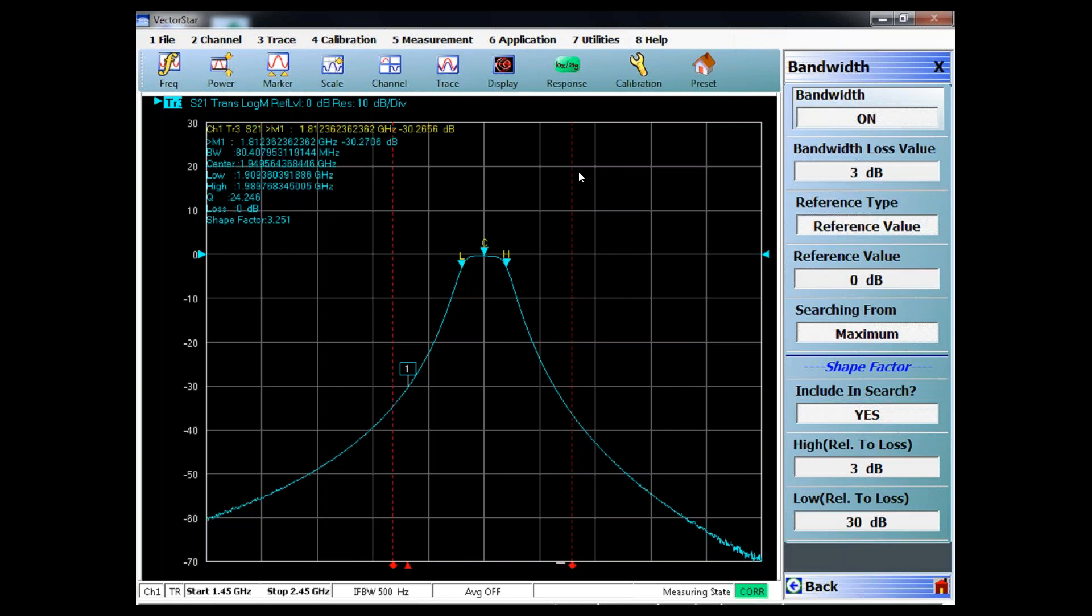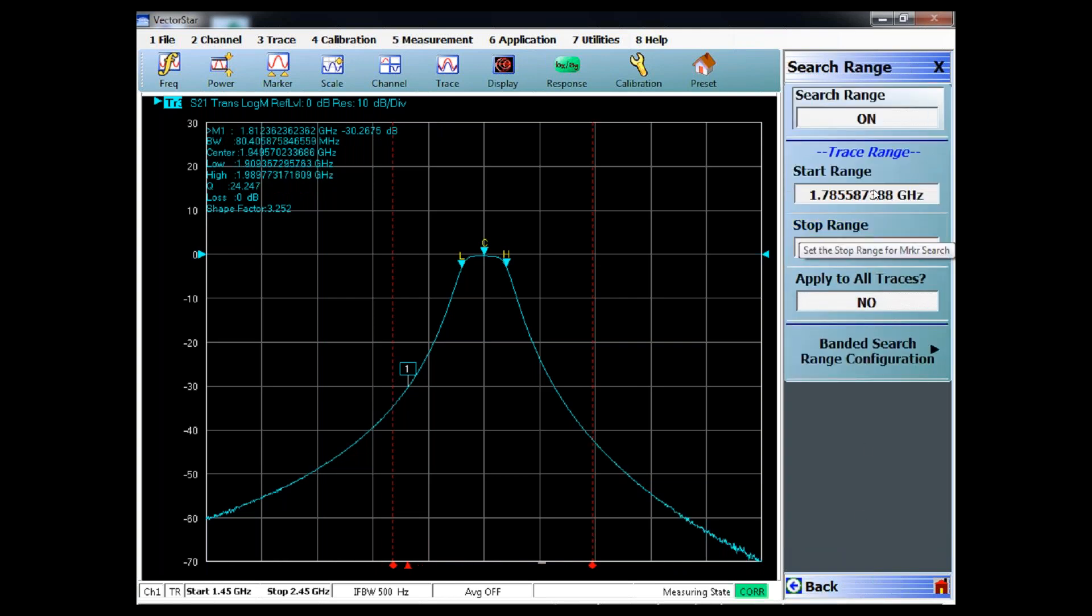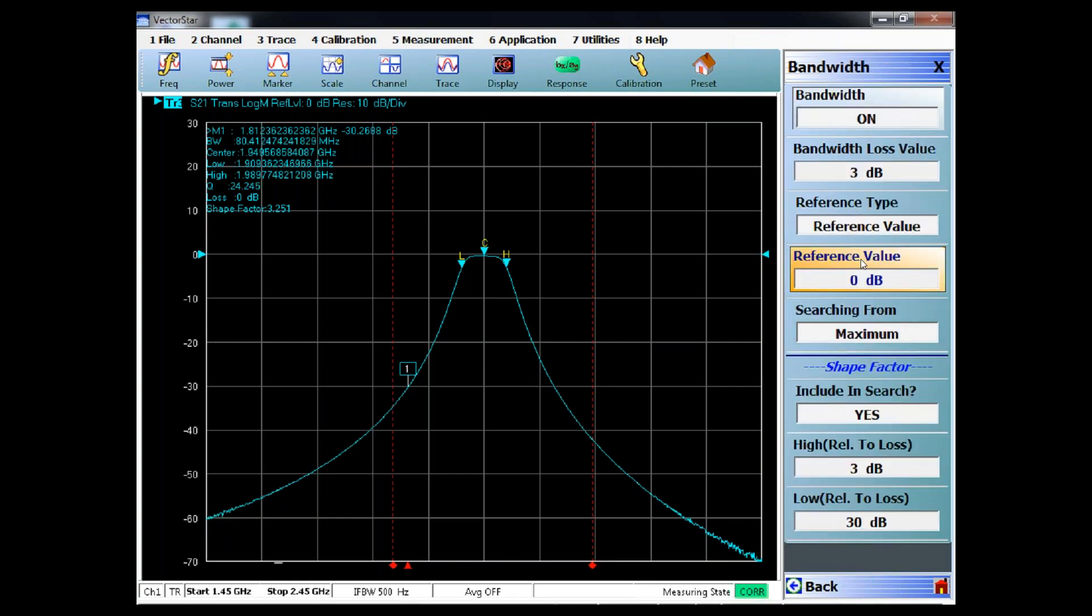You'll also notice that you can apply a search, a frequency search. Here I can move that right here, and I'll go back and go into search range, and you can set the start and stop range right there. You can change this number to whatever you need to measure. Different filters have different specifications, and that'll be indicated and tell you what to set these values to.